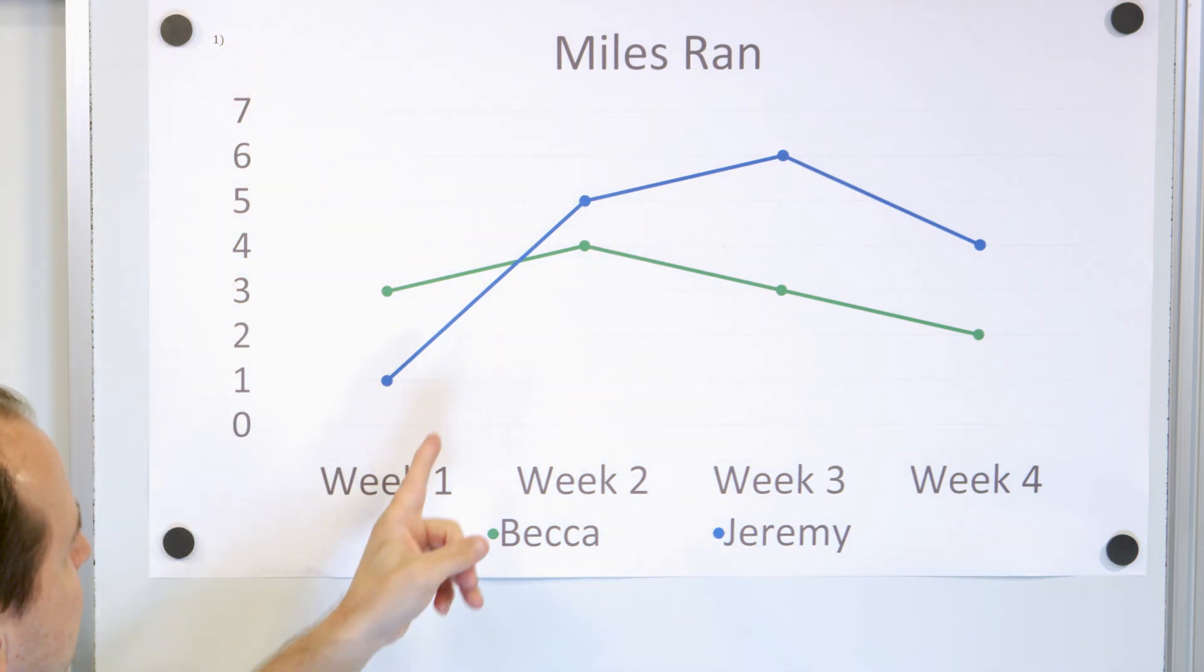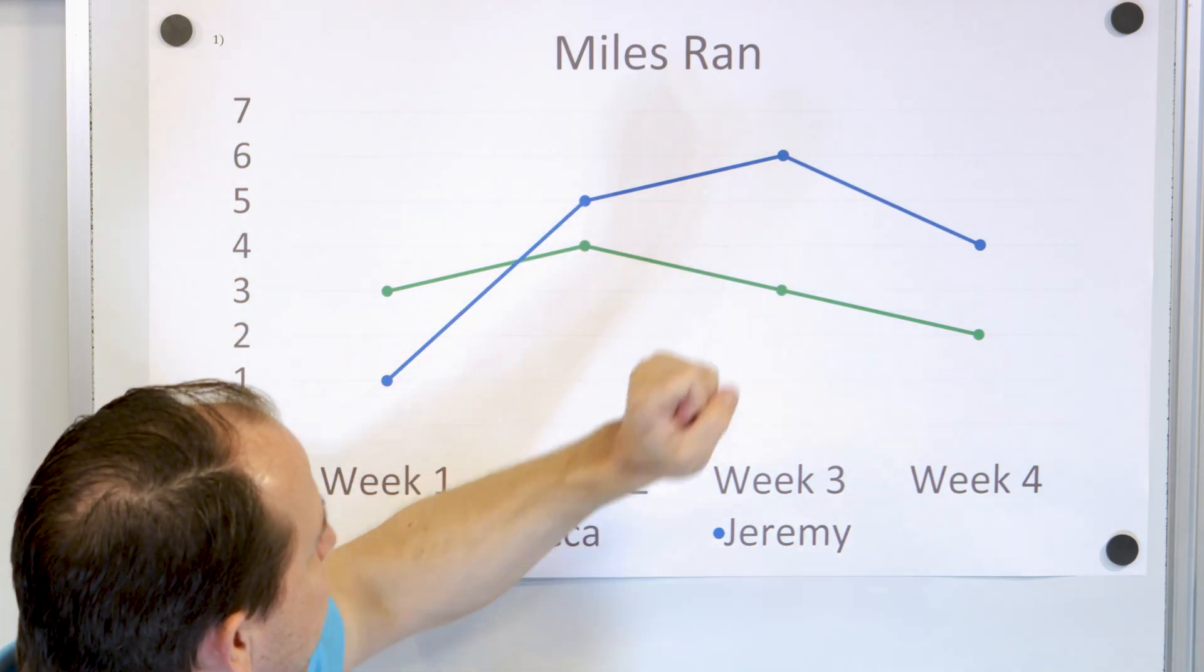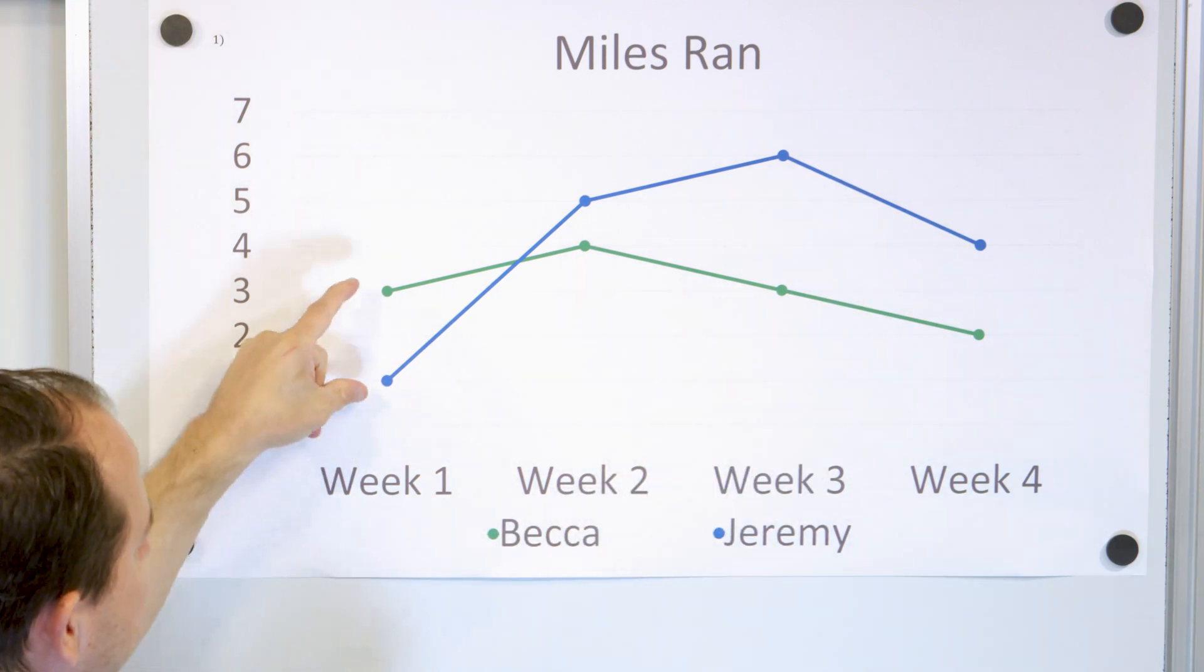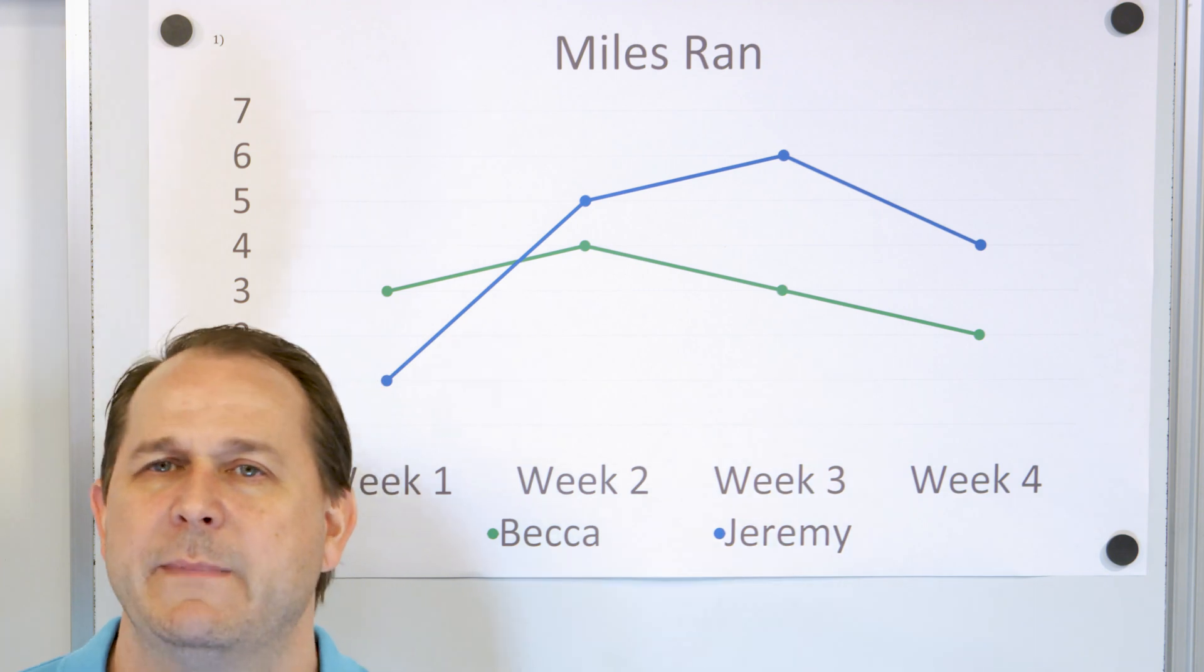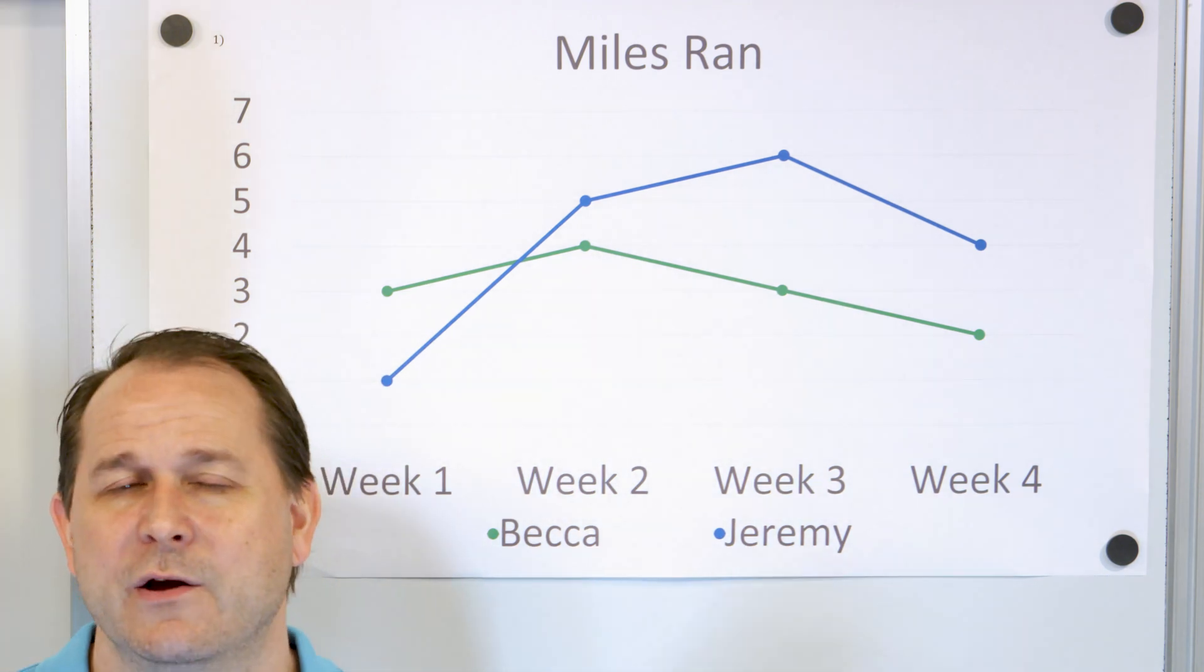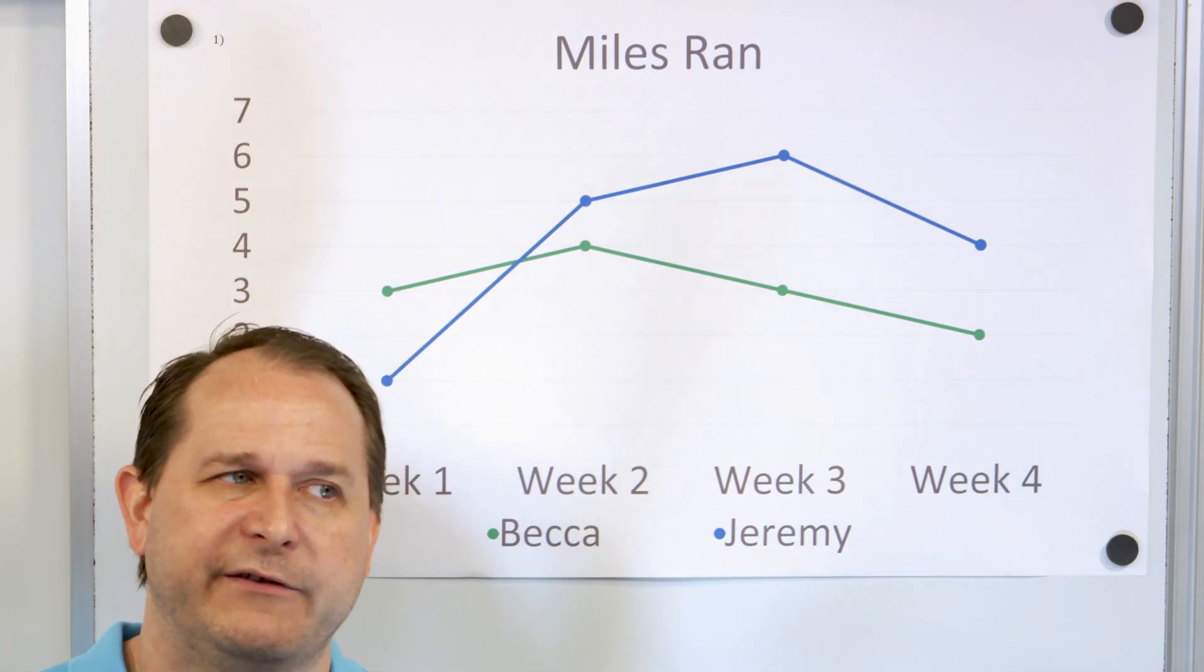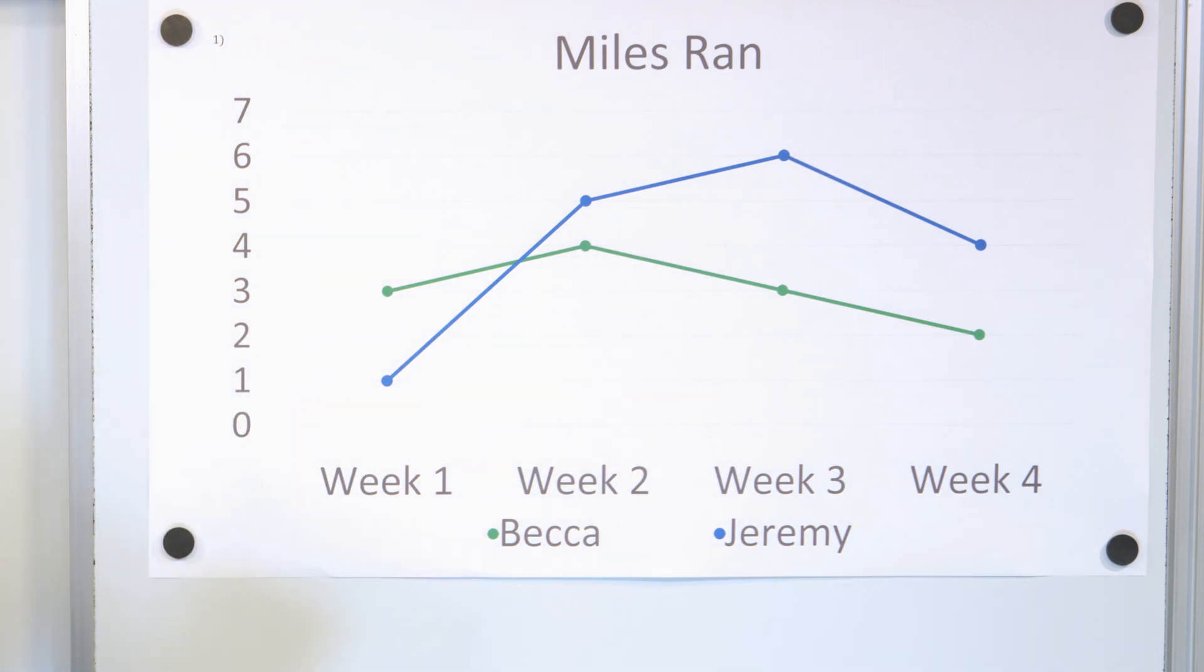So in general, Jeremy ran more. It's only in the first week that flipped around, Becca ran more. So what does that mean? Maybe Becca just didn't have much time. Who knows why? They just have different schedules and he had more time to run or something like this. But that's how you actually read the graph.